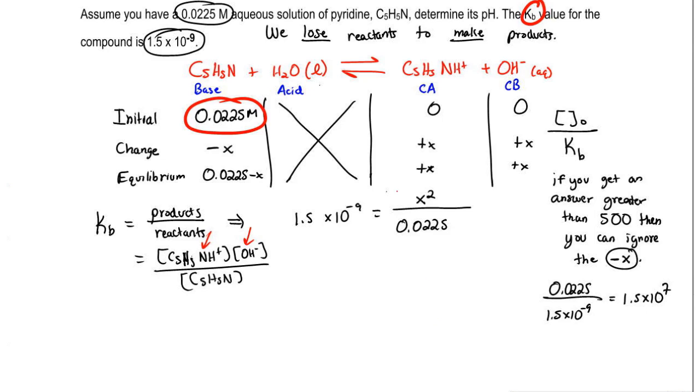So what we're going to do here is we're going to multiply both sides by 0.0225. So we're going to say now X squared equals 3.375 times 10 to the negative 11. We don't want X squared, we just want X. So take the square root. So X here equals 5.81 times 10 to the negative 6.